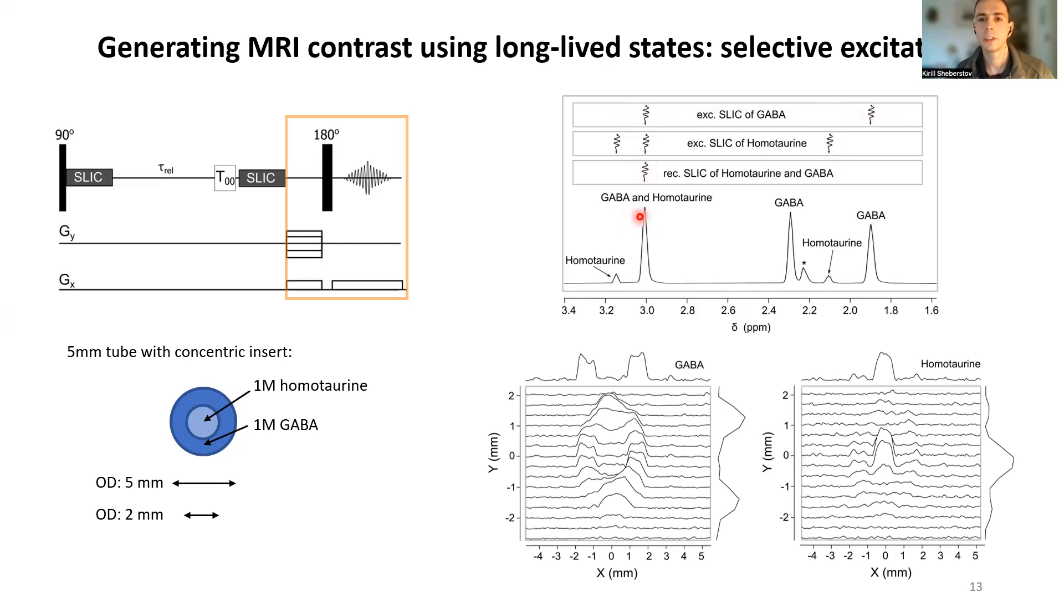We indeed see that basically in these two experiments we detect only signals of homotaurine, which is in the outer compartment, or only of GABA, which is in the inner compartment.